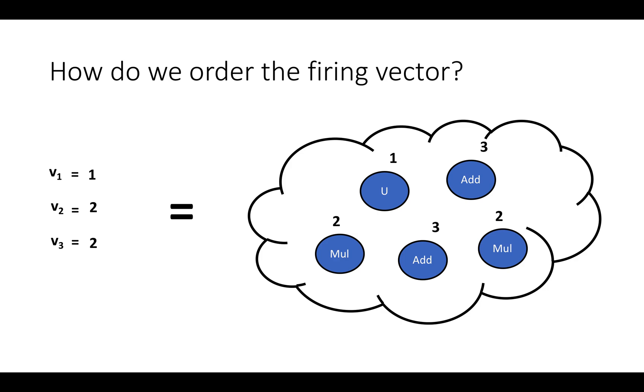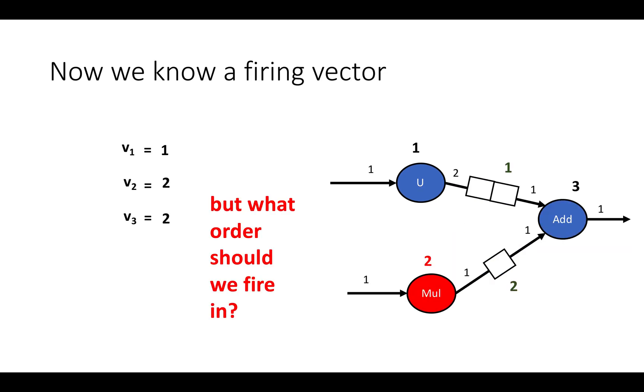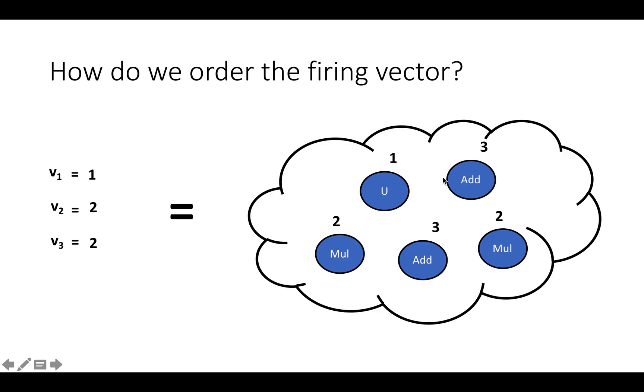But there are data dependencies between the nodes in the data flow graph. For example, if you look at this adder, it needs one piece of data from the upsample and one piece of data from the multiply before it can fire. So you can't just start a firing sequence by executing the adder. You have to find the right sequence of operations in this cloud of possible operations and then repeat that specific sequence over and over again.